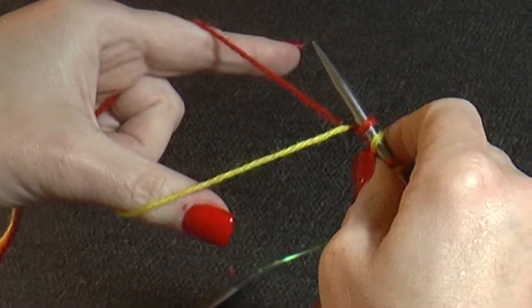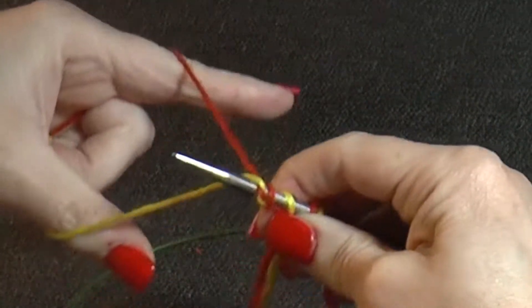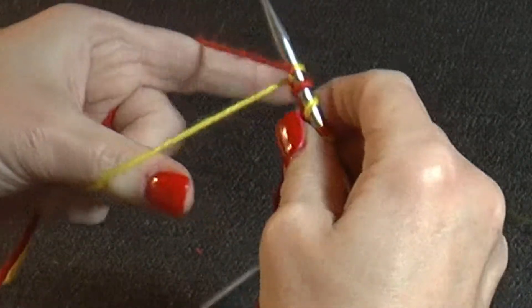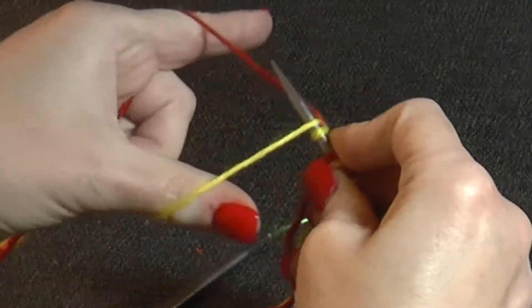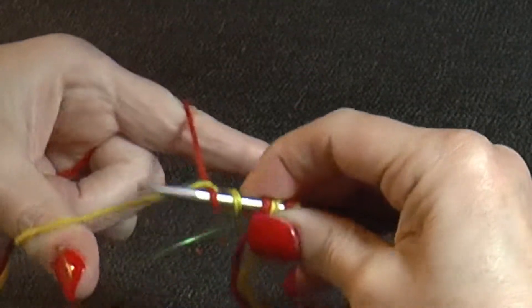Let's do that again. Around both of them and in the middle, one stitch. Around the thumb, over the index finger, two stitches.